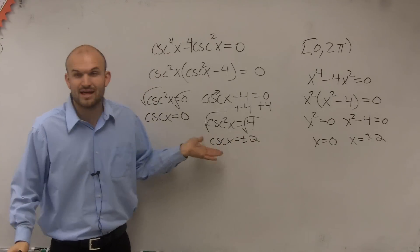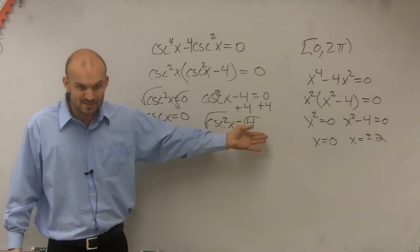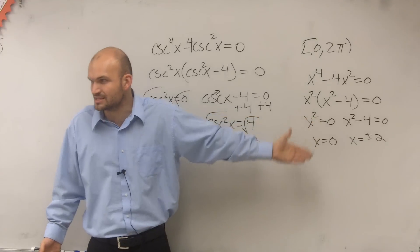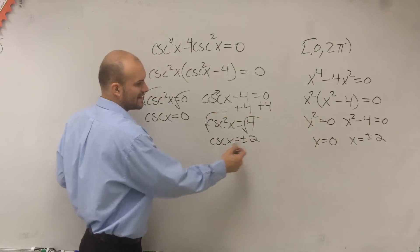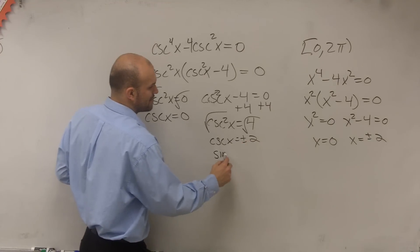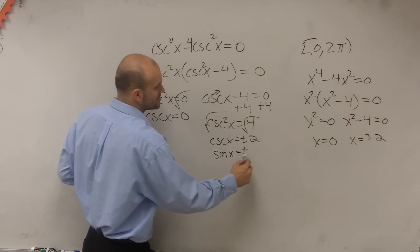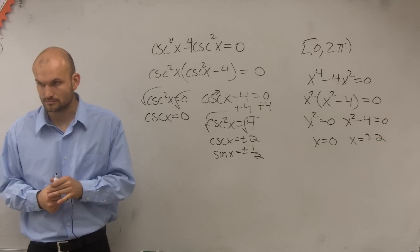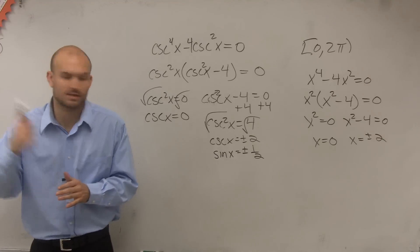But remember, rather than dealing with the cosecant, we don't want to deal with the cosecant when we're trying to find the values, right? We want to deal with the sine. So if cosecant of x is plus or minus 2, that means the sine of x equals plus or minus 1 half, right?